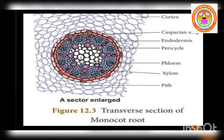Next, we can see the pith. It is present at the center, made up of parenchyma cells which are loosely arranged with lots of intercellular spaces. It contains an abundant amount of starch grains. The major function of pith is food storage.